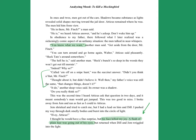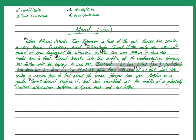All these are very tense interactions between Atticus and the men, but for those who didn't pick up on it, Harper Lee gives you a big flashing sign for how you should feel about this scene. Here's what I wrote: 'When Atticus defends Tom Robinson in front of the jail, Harper Lee creates a very tense, frightening mood. Interestingly, Scout is the only one who isn't aware of how dangerous the situation is, so Lee uses Atticus to show the reader how to feel. Scout bursts into the middle of the confrontation thinking her father will be happy to see her — instead, his face killed her joy. She describes his face as a flash of plain fear. If at that point the reader is unsure how to feel about the scene, Harper Lee uses Atticus as a guide.'